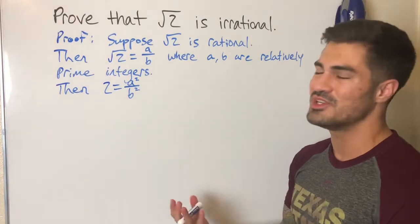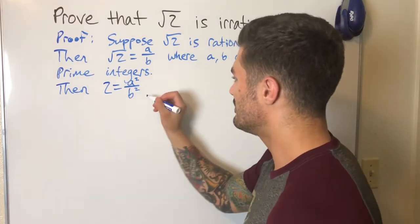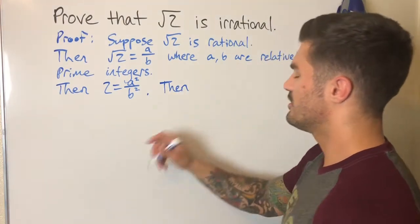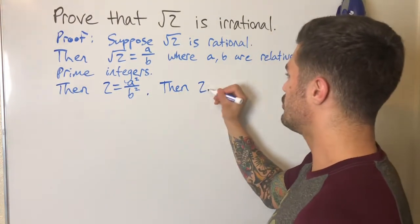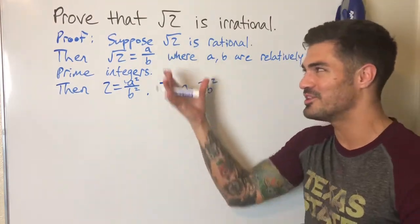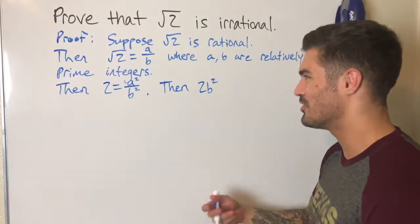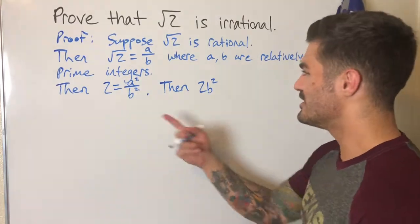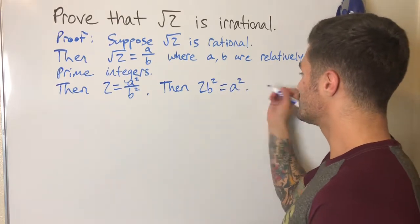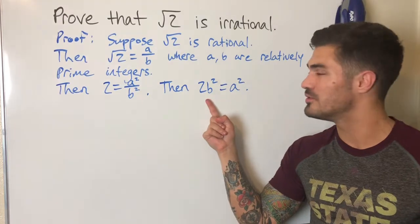I'm going to multiply both sides by b² to make progress. Then 2b² = a². What does this tell us? This tells us that a² has a factor of 2 — that means a² is even.